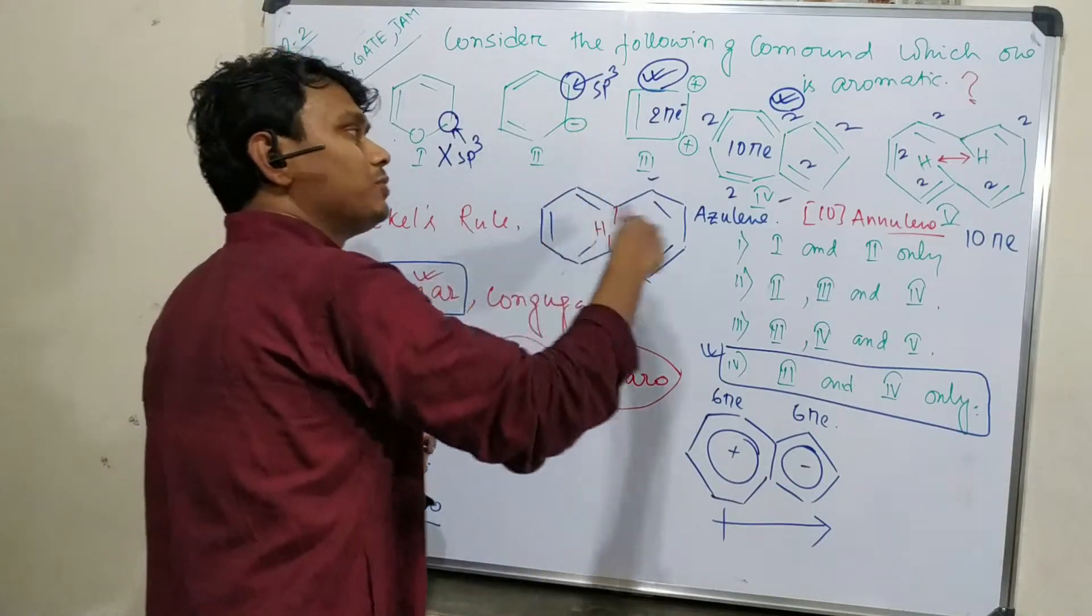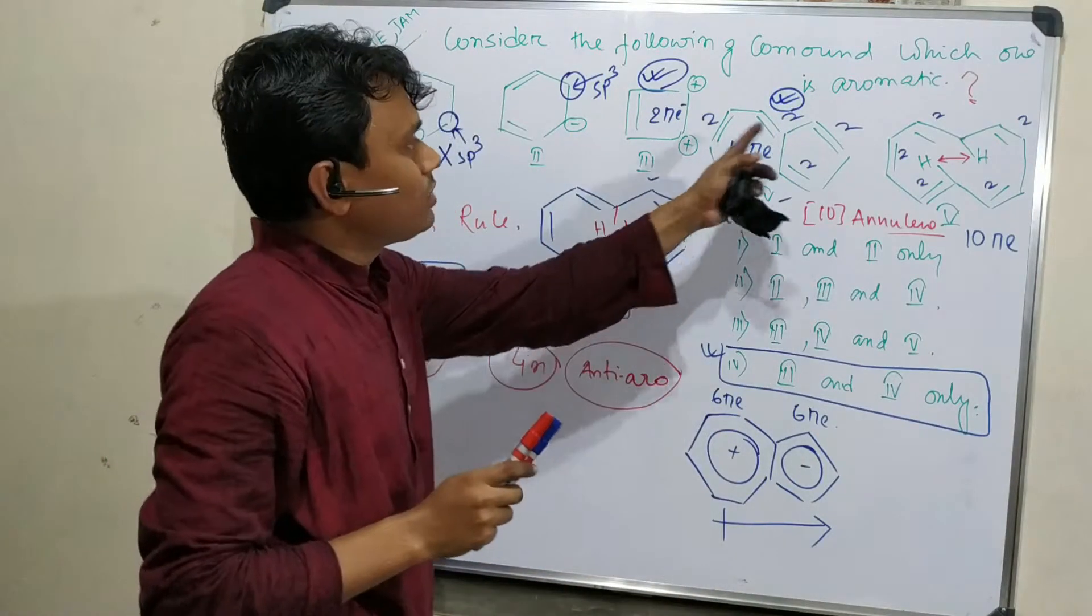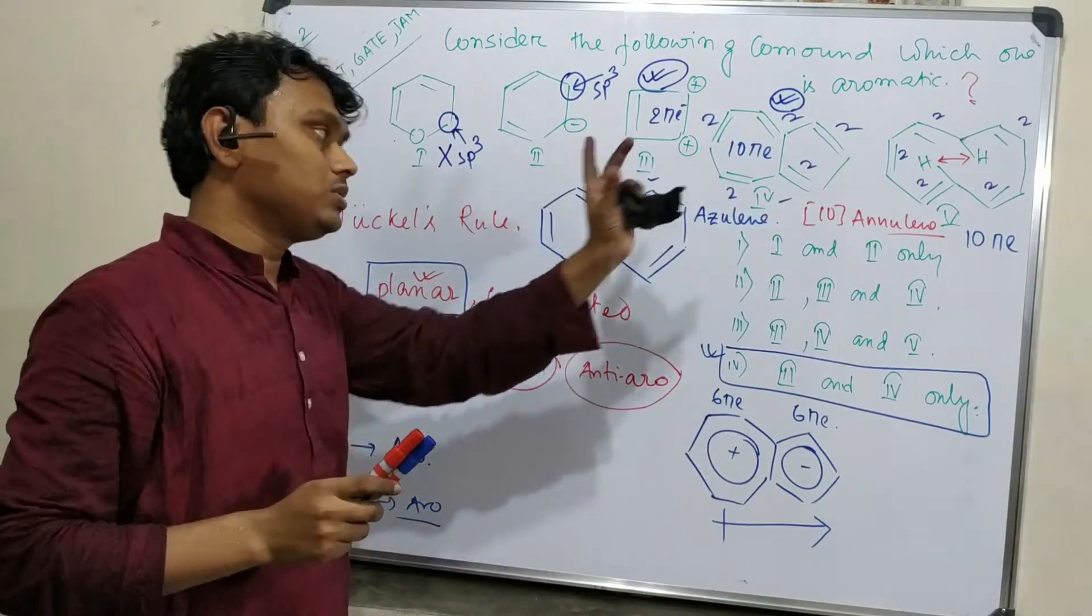This contains 2 pi electrons, aromatic. Here, azulene, this contains 10 pi electrons, conjugated planar, so this is also aromatic.